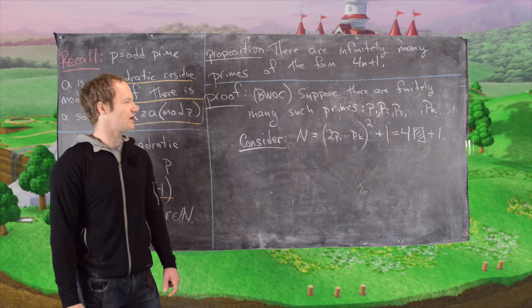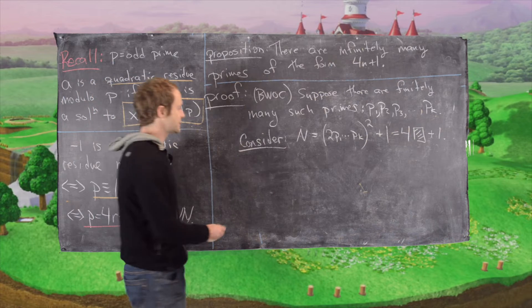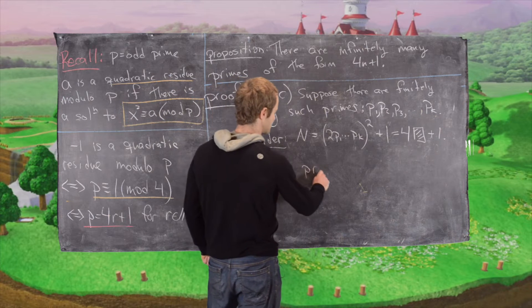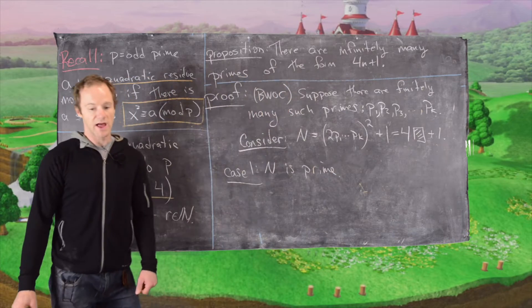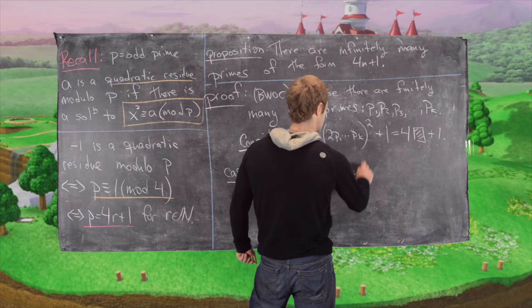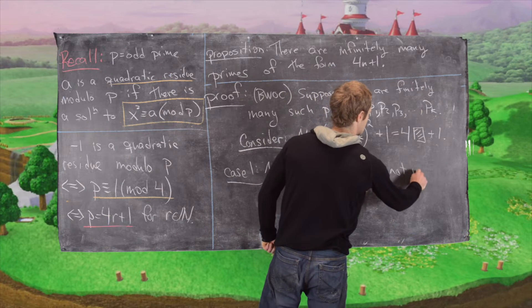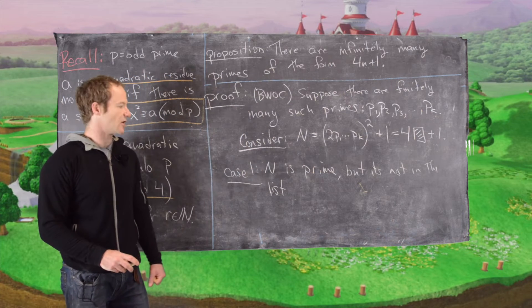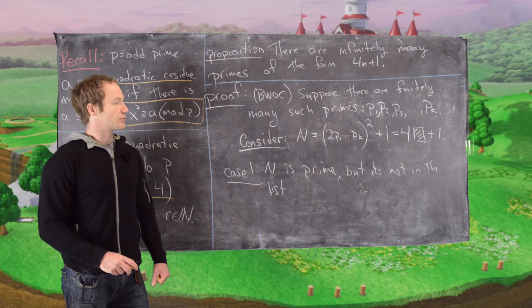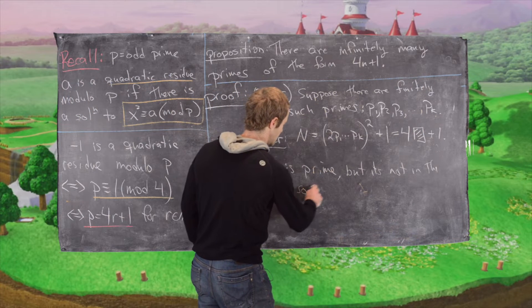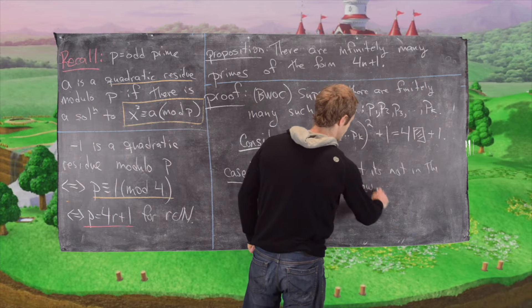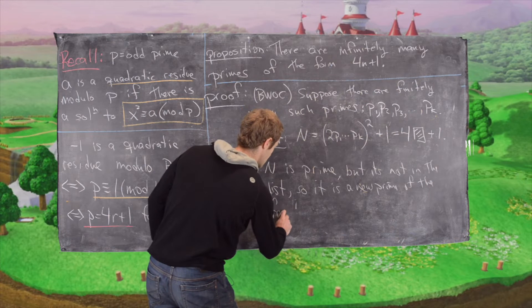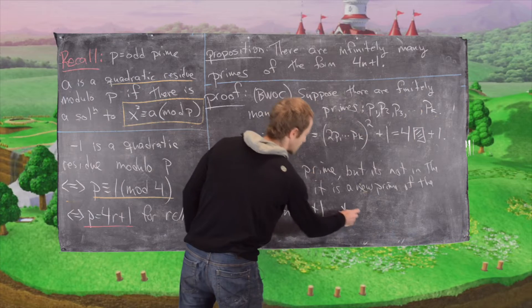So now Case 1: N is prime but it's not on the list. But we said our list contained all of those primes of that form, so it is a new prime of the form 4n plus 1. But that's a contradiction.